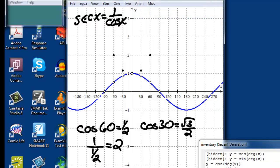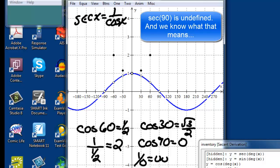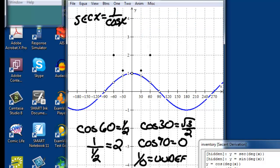At 90 degrees, we have a value of 0 for the cosine. Cosine of 90 equals 0. And 1 over 0 is undefined. So I'm going to draw an asymptote there at 90 degrees.